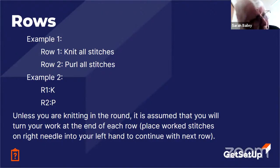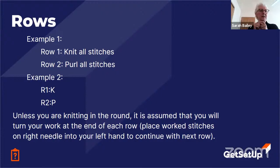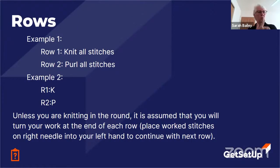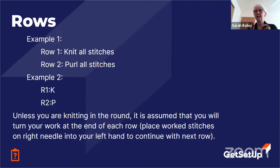Unless you're knitting in the round — like using double-pointed needles to make a hat or a sock, or a circular needle to make a tube for a sweater — those are called rounds. The assumption if you're not working in the round is that you're working in rows, meaning when you get to the end of the row, you're going to turn that needle around, put it back in your left hand, and work across the row again.